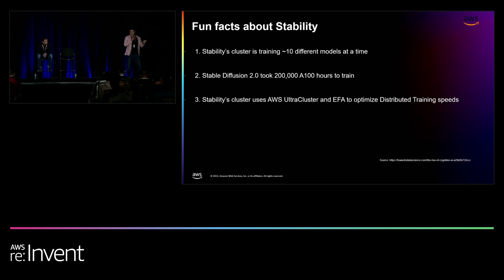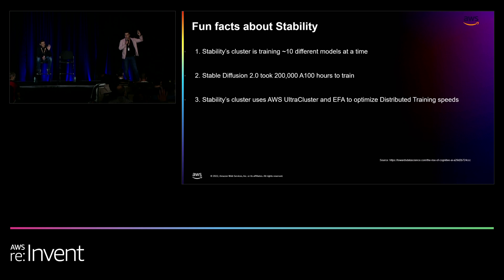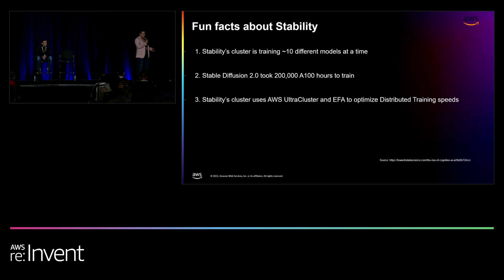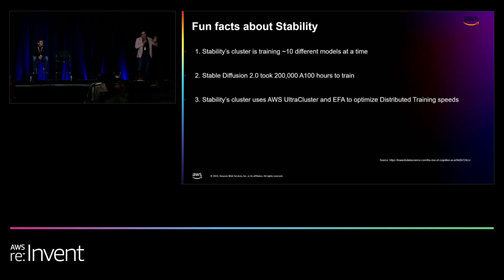Has anyone seen the Stable Diffusion 2 launch? What are your thoughts? Some thumbs down — I've been monitoring it as well. I just saw today that Stable Diffusion 2 does allow AI to actually generate hands, which is pretty cool.